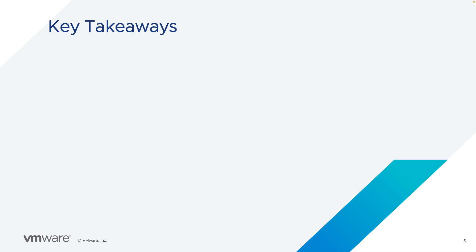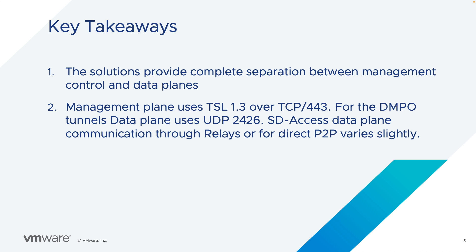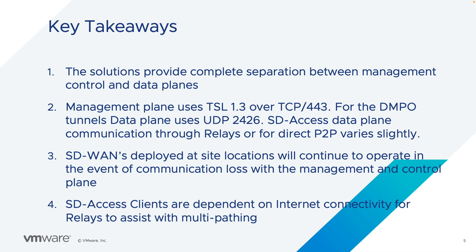The key takeaways for this video are: the solution provides complete separation between management, control, and data plane. Management plane uses TLS 1.3 over TCP 443. For the DMPO tunnels, the data plane uses UDP 2426. The data plane communication for SD-Access is slightly different, connecting through relays or direct peer-to-peer, which varies slightly. SD-WAN deployed at site locations will continue to operate in the event of communication loss with the management and control plane. And SD-Access clients in particular are dependent on internet connectivity for relays to assist with multi-pathing.